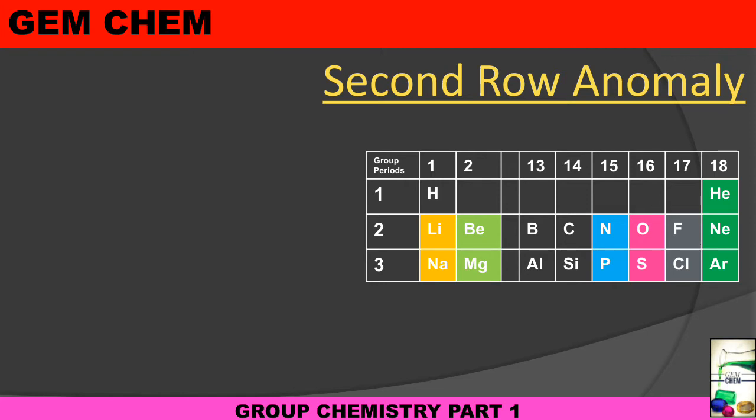Now, the first topic in the Group Chemistry chapter is second row anomaly. Whenever we see different groups and their trends, the common observation is that the second row (that is, second period) elements will show some difference